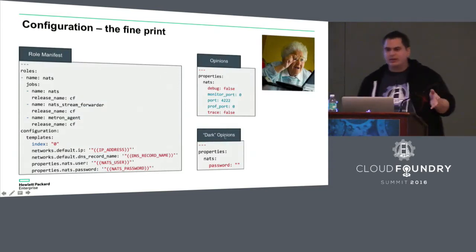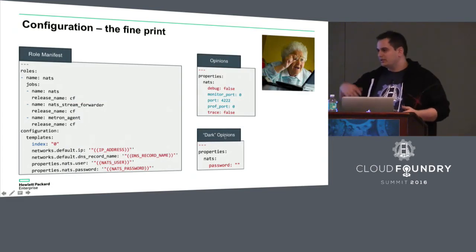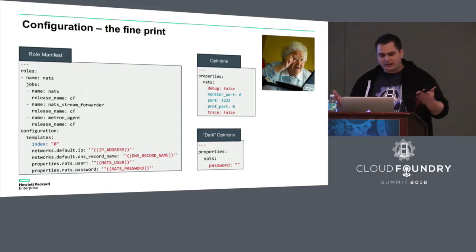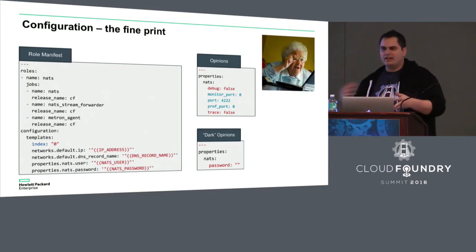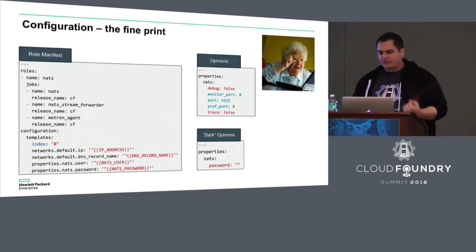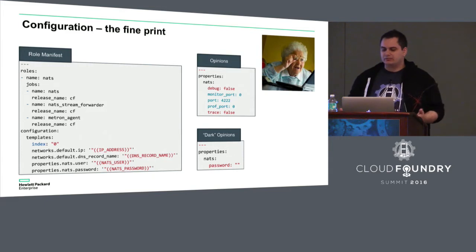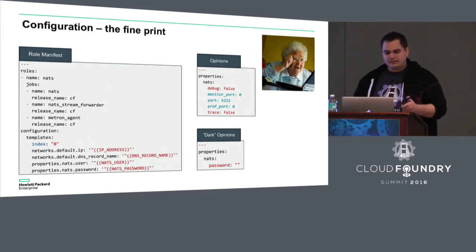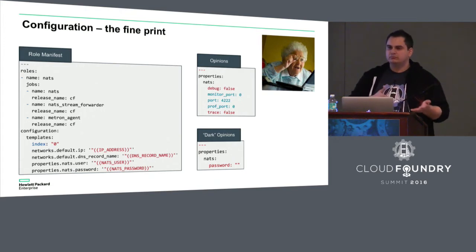On the left, we have a role manifest — and again, this is used at build time; the user that deploys these Docker images will never see this. You have a list of roles, and for each role you'll get a Docker image. For each role, you need to specify what you want in it. In this example, we have NATs, the NAT stream forwarder, and Metron agent — so at the end, if you feed this into Fissile, you'll get a Docker image containing these three jobs. We have a configuration section, and we wanted to do configuration through environment variables because we've noticed it's a best practice — we've seen it in things like 12-factor apps. Environment variables are really easy to use with Docker, so we created these mustache templates to help map environment variables to BOSH job properties.